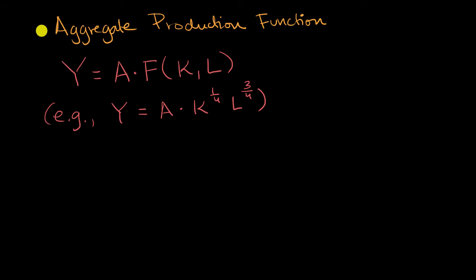In a previous video, we introduced the idea of an aggregate production function, which is a fancy way for a mathematical model that an economist might use to tie the factors of production in an economy to the actual aggregate output of an economy.